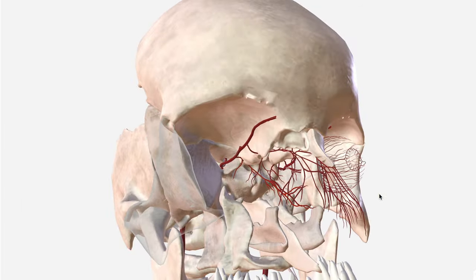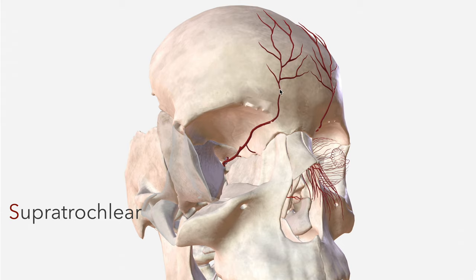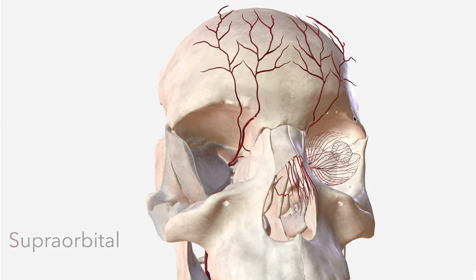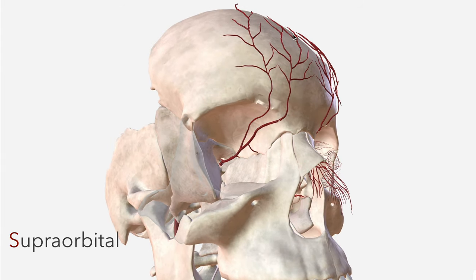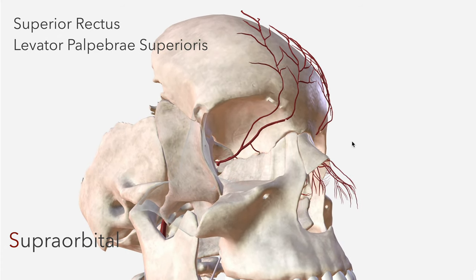Our next two branches are our first and second S — the first and most medial is the supratrochlear artery, which is the second terminal branch of the ophthalmic, departing the orbit and supplying the forehead. We then have the supraorbital artery, which glides through the supraorbital notch of the frontal bone and supplies muscle and skin of the forehead, as well as the superior rectus and levator palpebrae superioris muscles.